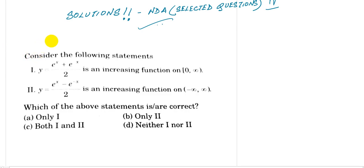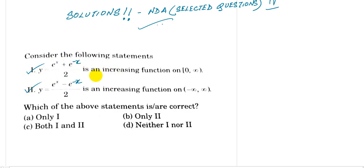We are given the following statements and we are required to infer certain things — which are correct. The first function is y equals e to the power x plus e to the power minus x. Statement one says it is an increasing function on closed zero to open infinity, and statement two says y is an increasing function on the real line.